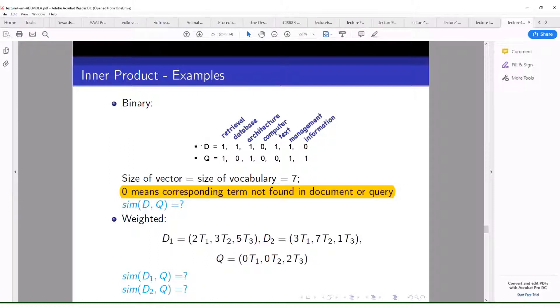They are all contained in either of this D or this Q, so this is what we refer to as your vocabulary. Now the representation that we have here, which is binary, says that whenever a term occurs in your document it will be assigned one, and whenever a term does not occur in your document it will be given zero.